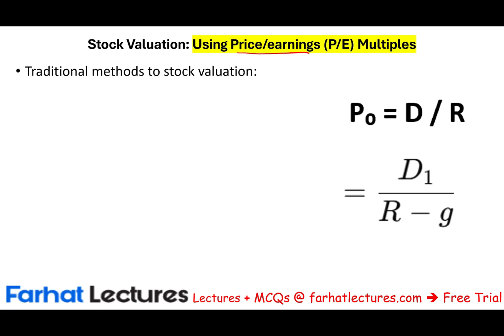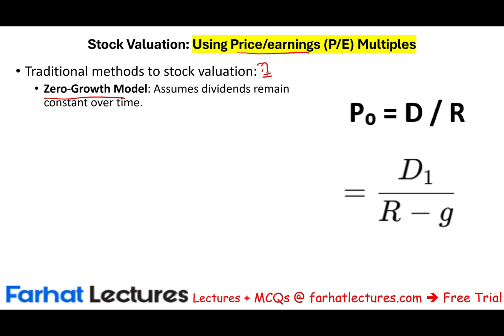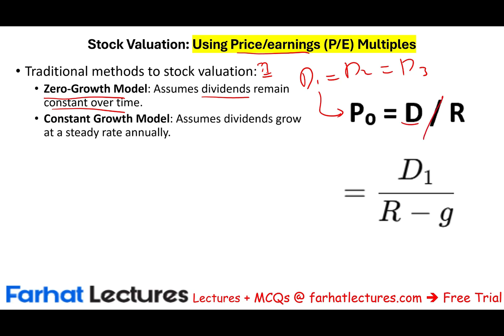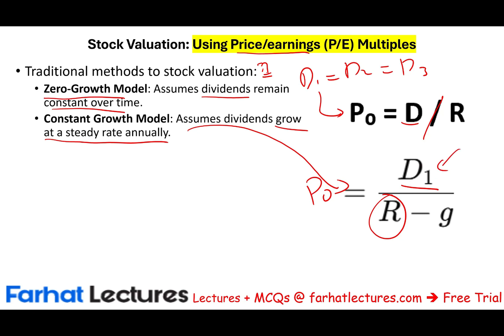In the prior sessions, we looked at the traditional method to stock valuation — determining a fair price for the stock based on certain figures. We looked at the zero growth model where dividends remain constant over time (D1 = D2 = D3), using the formula: price equals dividend divided by the discount rate. We also looked at the constant growth model, which assumes dividends grow at a steady rate annually, using the formula P = D1 / (R - G), also called the Gordon model.